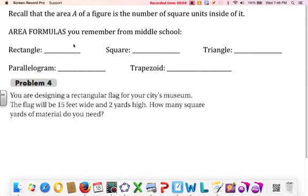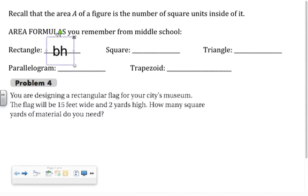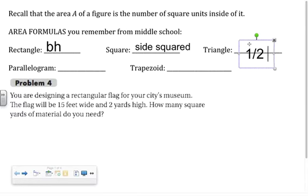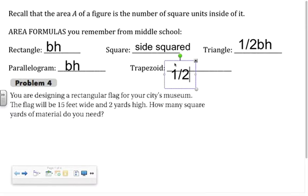In this lesson we're using formulas that you learned in middle school and taking them to the next level. You should remember that the formula for the area of a rectangle is base times height. A square can be found the same way, but since the length of each side is the same, you could just take the side and square it. In a triangle, I hope you remember one-half base times height. Parallelogram is also base times height, and trapezoid is one-half height times base one plus base two. These are all formulas you should have seen in middle school.